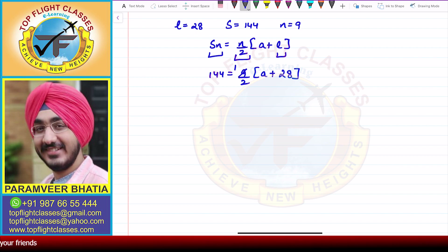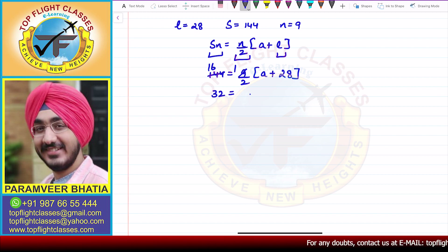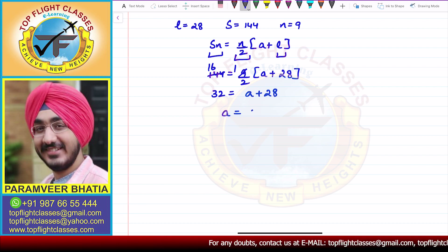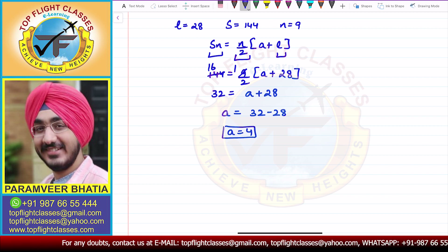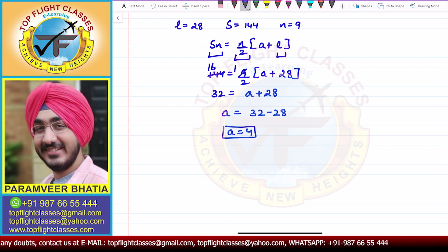Now, 144 divided by 9 gives 16. From here, 16 into 2, that is 32, is equal to A plus 28. So A comes out to be 32 minus 28, which means A is equal to 4 in this particular case, and that is what is asked of us in this question.